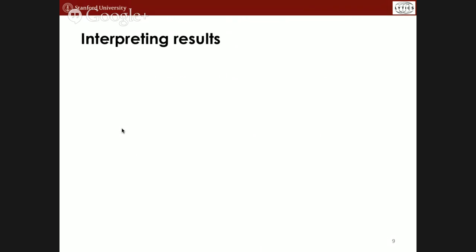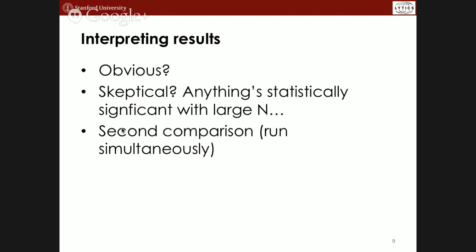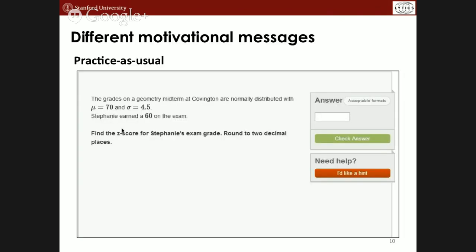You might interpret these results skeptically — why do you need 200,000 participants? And a psychologist might note that anything is statistically significant with a large enough sample. So there was a second comparison run simultaneously: practice as usual, growth mindset message, and a positive message — something like 'some of these problems are hard, but do your best.' Participants were randomized to one of these three conditions.